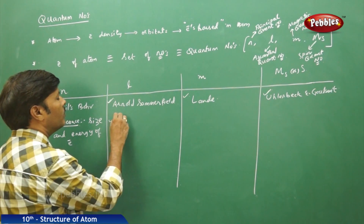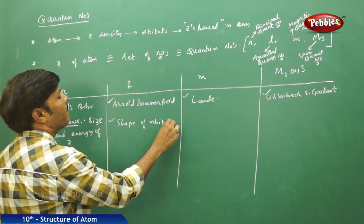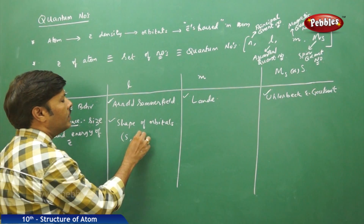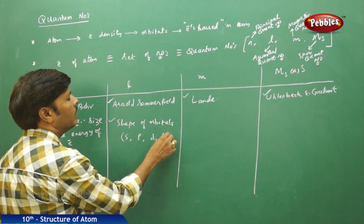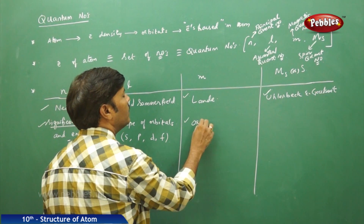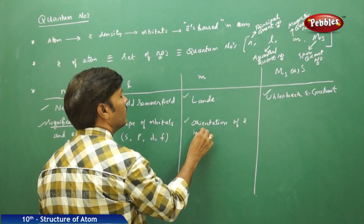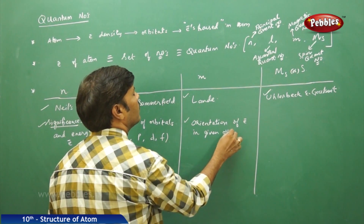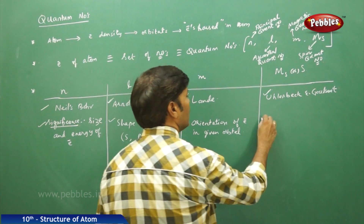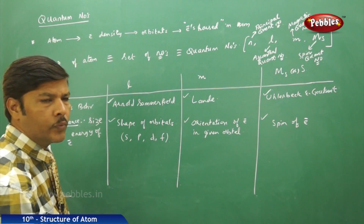If you go for the azimuthal quantum number, it gives the shape of orbitals. There are four types of orbitals: s orbitals, p orbitals, d orbitals, and f orbitals. The magnetic quantum number gives the orientation of the electron in a given orbital, and the spin quantum number gives the spin of the electron.